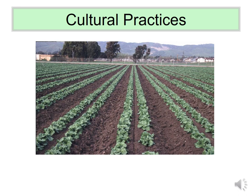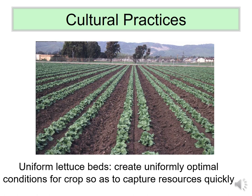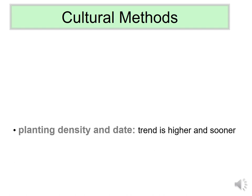As farmers, one of our goals should be to create uniform optimal conditions for our crop — no hard pan, uniform soil textures, and a level field with no low or high spots. Weeds grow where optimal conditions do not exist, so creating those conditions can produce a very competitive crop.